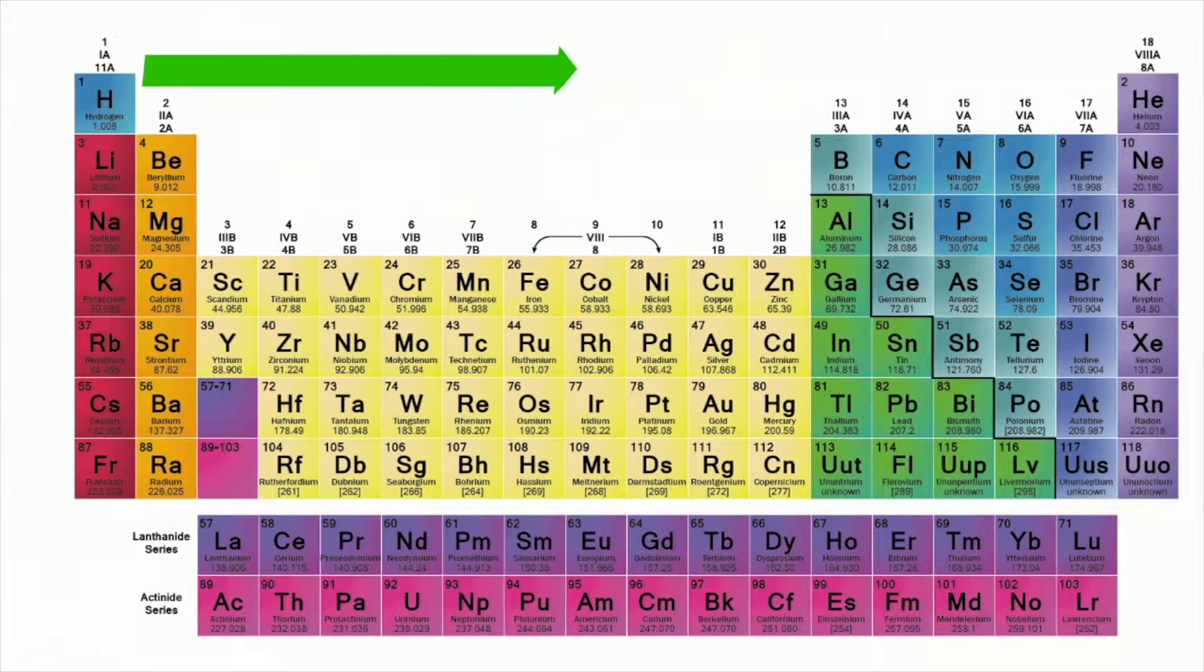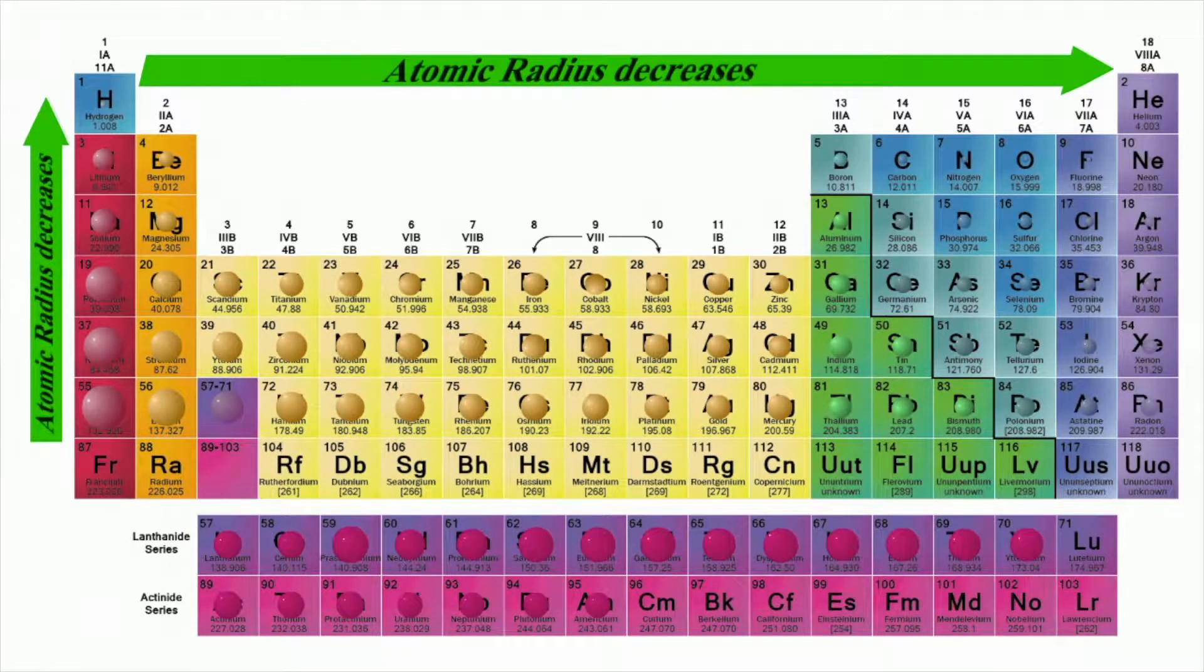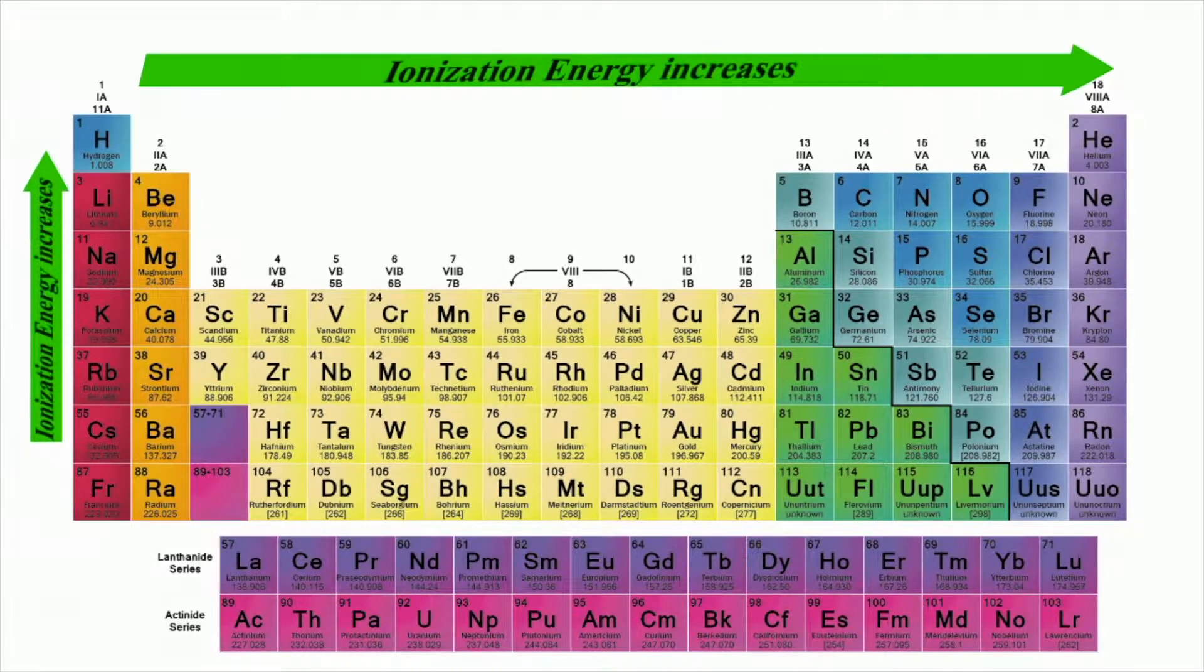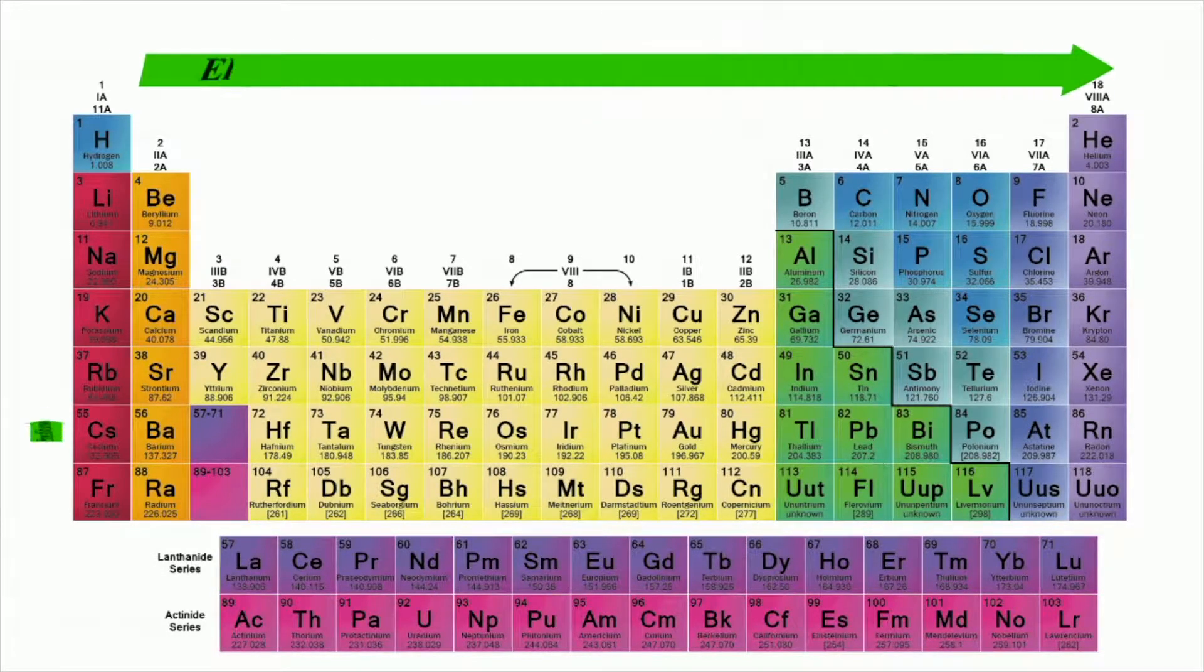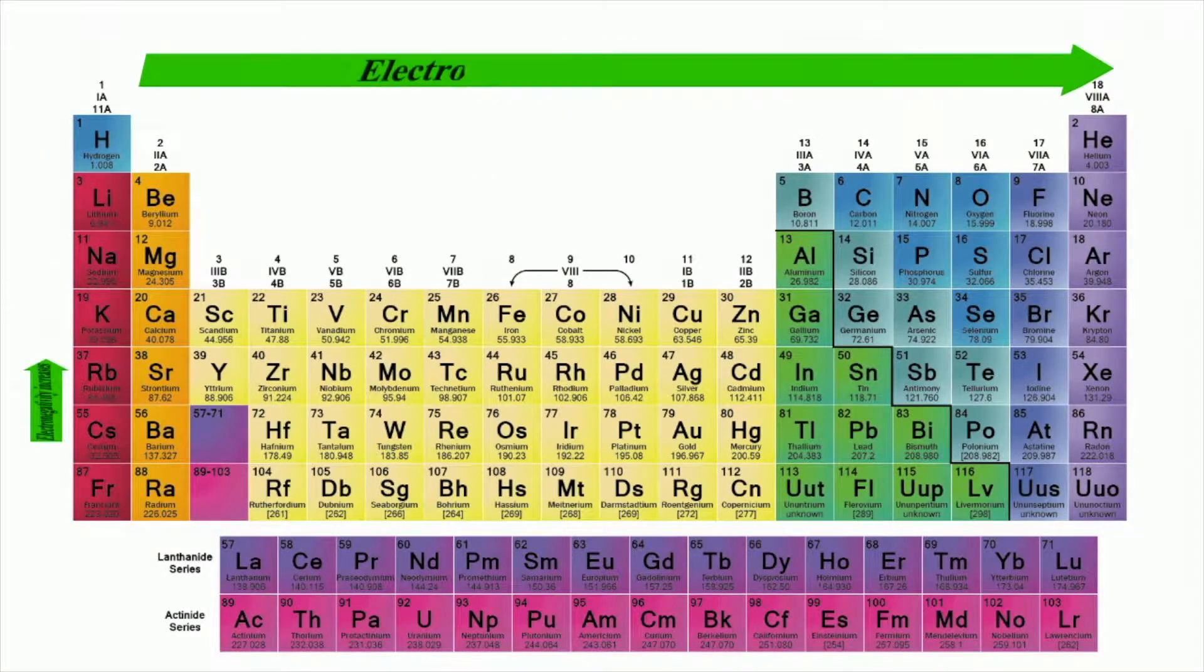Moving from left to right on the periodic table, the atomic radius of the elements decreases. Ionization energy increases, electron affinity increases, and electronegativity increases.